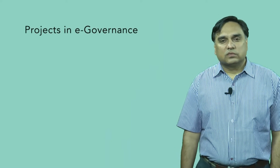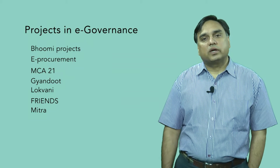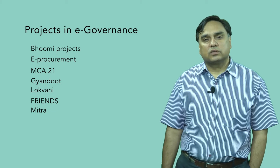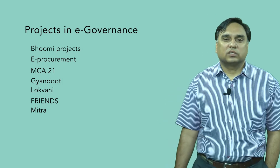There are different kinds of projects going on in the name of e-governance: the Bhoomi project, which is very popular, e-procurement, which is very popular, MCA 21, Gyan Dutt, Lokwani, Friends, and Mitra. These are e-governance platforms providing different kinds of services to citizens.